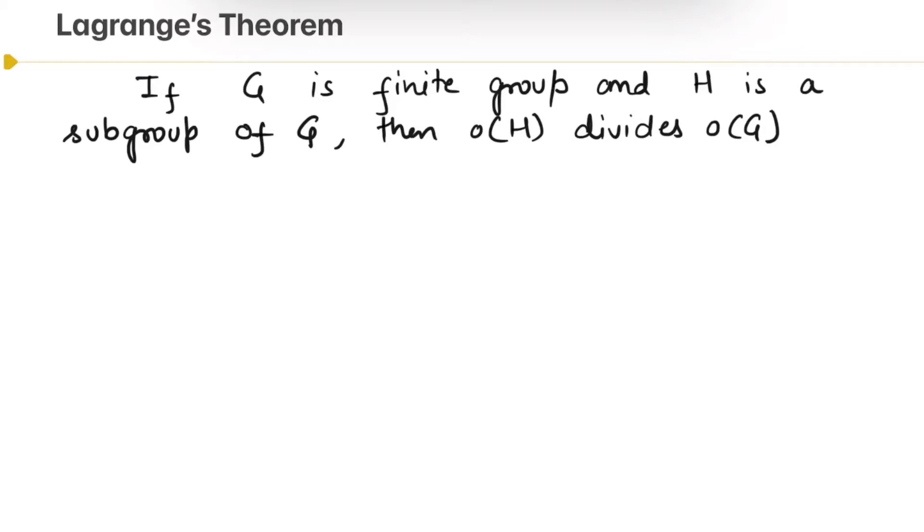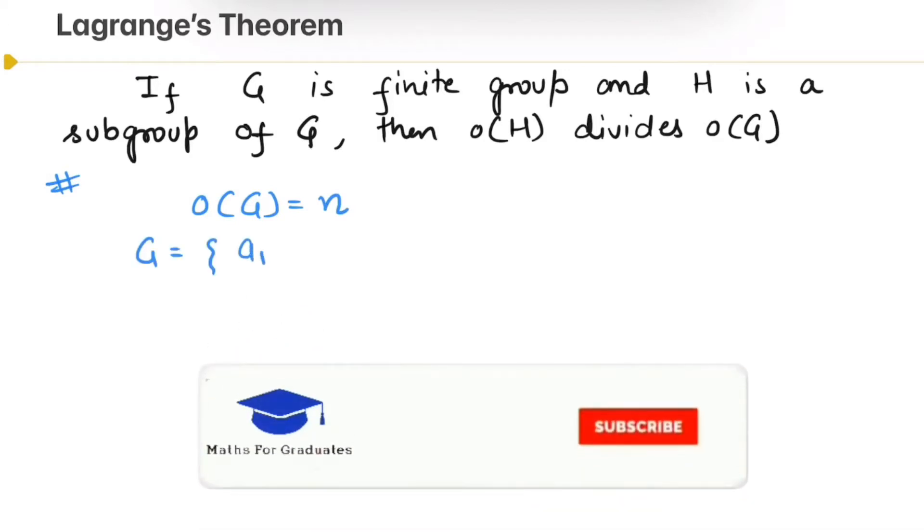Now let's start proving. Let us assume that the order of G is n. Suppose G has elements a1, a2, ai, aj, and an, and we are given H is a subgroup of G.